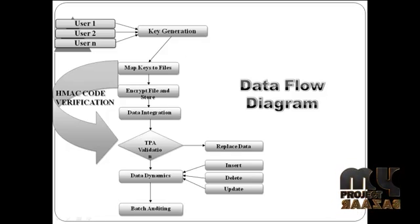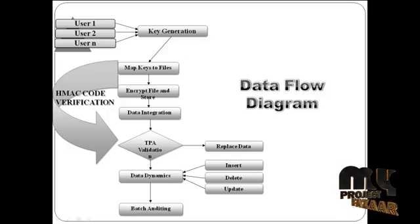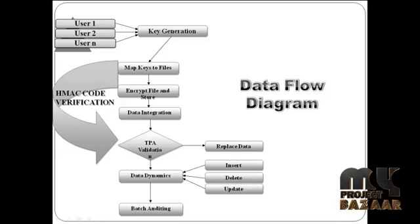The TPA sends a request to the data owner, and audits data received from both the data owner and the cloud server. It validates the data using signatures and data integrity proofs. After successful validation, data dynamics are performed - the data can be updated at any time from the cloud server. Finally, batch auditing allows any number of users to be audited simultaneously.